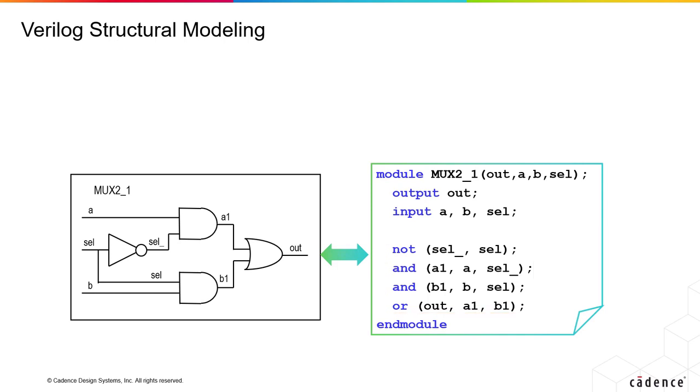Normally when you call up a module, you have to say the module name and then the instance name and then a list of parameters. With primitives, it does not require you to specify instance names. However, you can specify it if you like, but it's not needed.